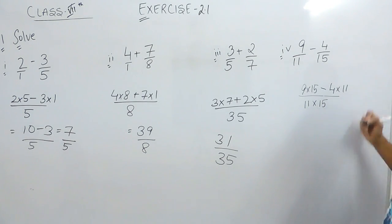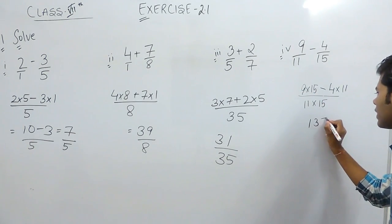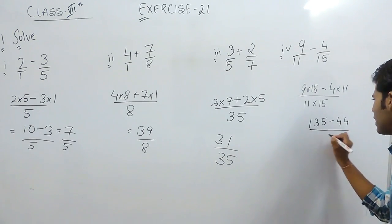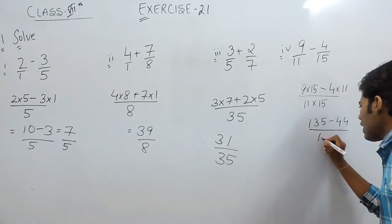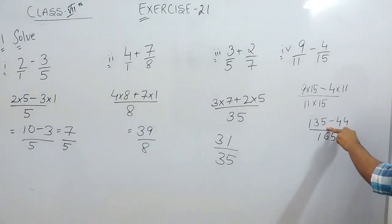So it will be 11 times. Now we will multiply this. That will be 135 minus 44 divided with 15 times 11, 150 plus 15. That will be 165. Now we will subtract these.